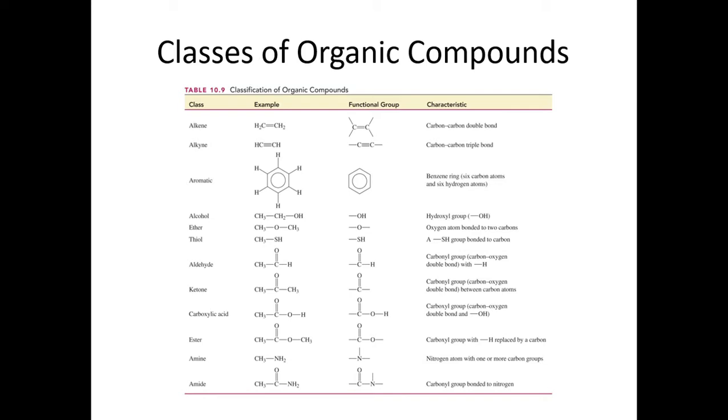So here are the classes of organic compounds. It begins with the alkenes and the alkynes. We will not see molecules with either of these functional groups. We will see molecules that have a benzene ring in them. We'll definitely see alcohols, which has the hydroxyl group. We have ethers here, thiol groups.